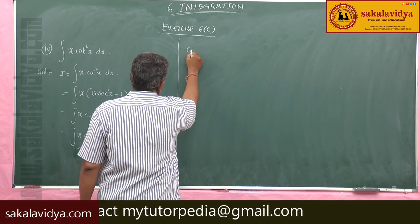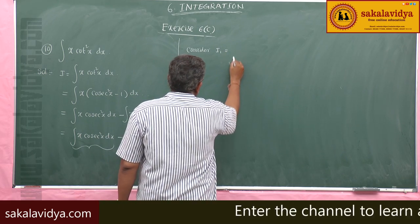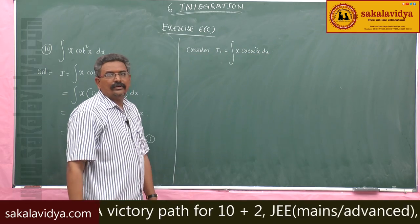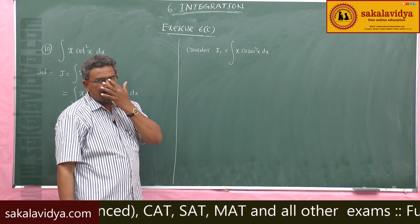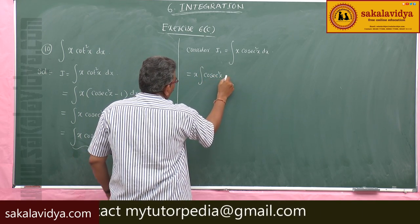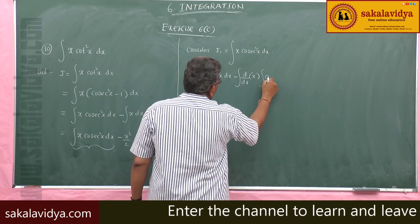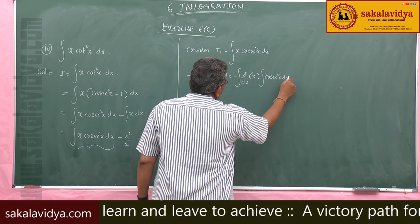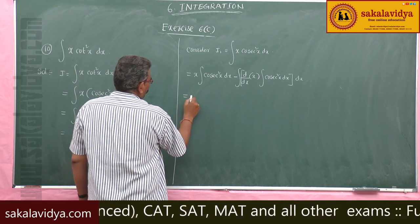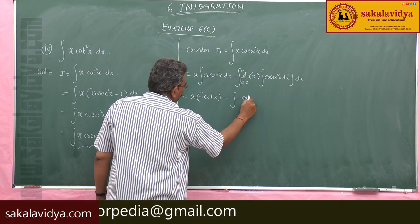Let I₁ = integral of x·cosec²(x) dx. Here x is the first function and cosec²(x) is the second function. Applying integration by parts: x · integral of cosec²(x) dx − integral of [d/dx of x · integral of cosec²(x) dx] dx. The integral of cosec²(x) is −cot(x), so this becomes x·(−cot x) − integral of 1·(−cot x) dx.